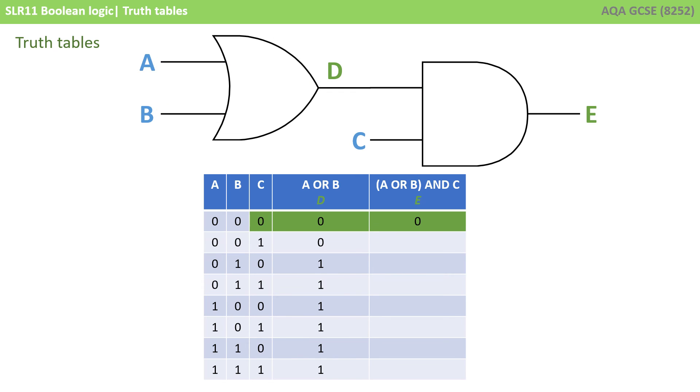So our AND gate has two inputs. It has input C and input D, which is effectively the output from the OR gate that we worked out just now. And remember with an AND gate, both inputs C and D need to be 1 for the output E to be 1. So we have 0 and 0, so that would be a 0. 1 and 0 would be a 0. 0 and 1 would be a 0. 1 and 1, both inputs being a 1, means the output E is a 1.